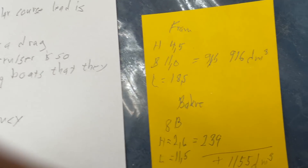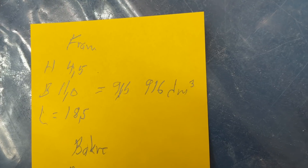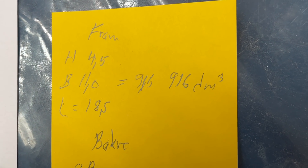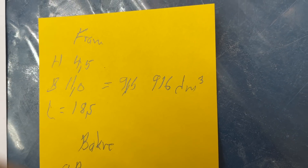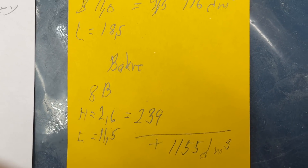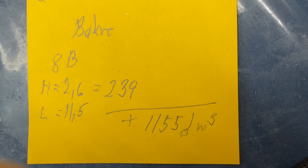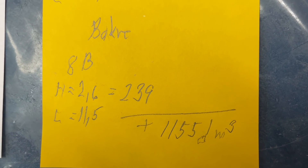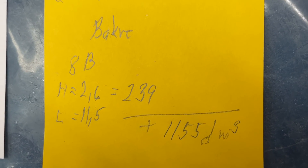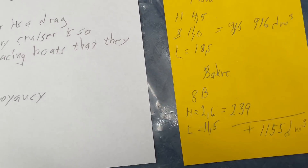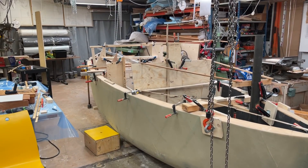Here is a little calculation. The deckhouse front part is 916 liters. The back part is 239 liters. Together that is 1,155 liters — 1.155 cubic meters. And as the boat displaces about one cubic meter, it will float and rely just on the deckhouse.